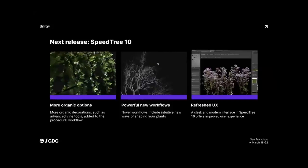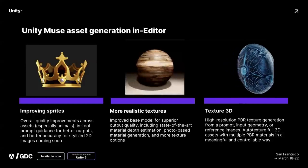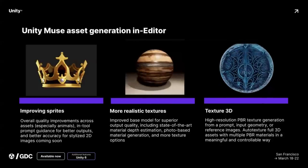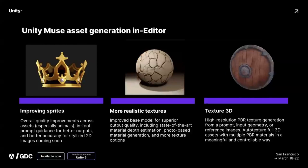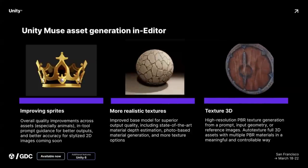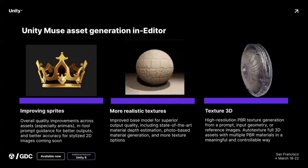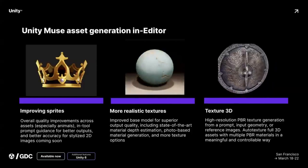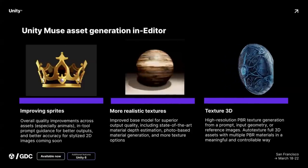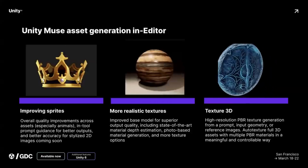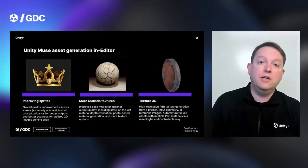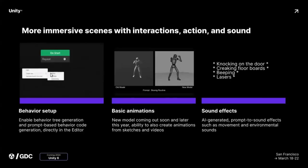Then we get into the AI stuff. Muse asset generation is improving with better sprites, more realistic textures, and PBR texture creation that you can generate from text input, geometry, or reference images, with automatic texturing coming along with it. That's all coming a little bit later on.